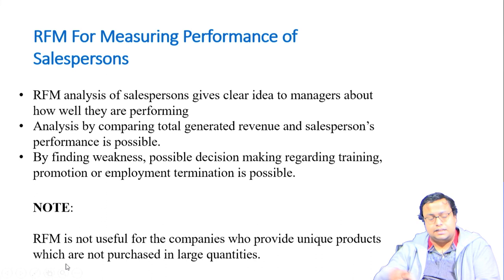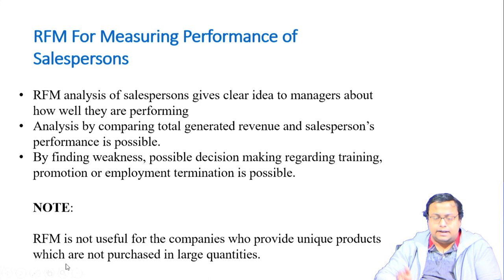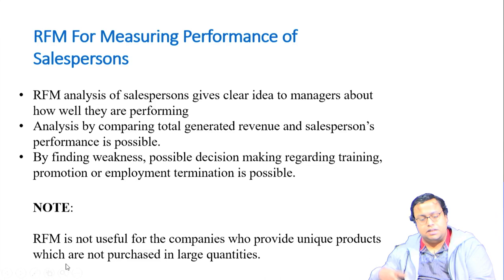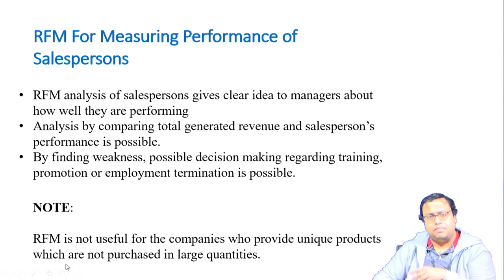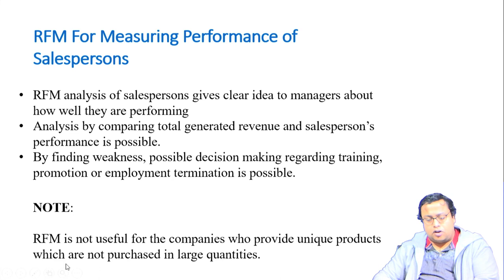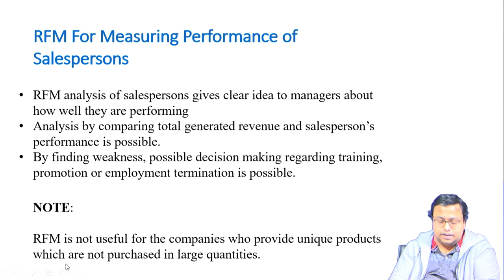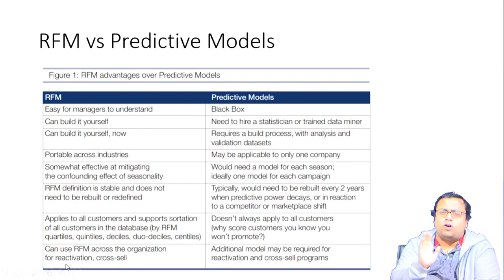RFM can also be used for measuring the performance of sales persons. RFM analysis of sales persons gives managers a clear idea of how well they are performing. By comparing total generated revenue (the monetary part), sales person performance can be analyzed. By finding weaknesses, decisions regarding training, promotion, or employment termination are possible. You can rank sales persons based on how recently they got an order, how many orders they got, and the total volume. However, RFM is not useful for companies providing unique products not purchased in large quantities.